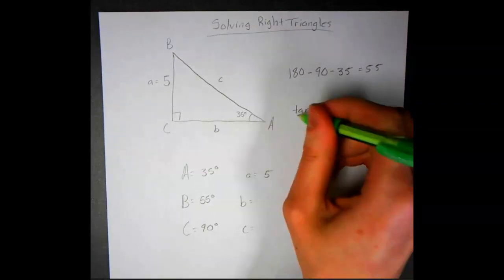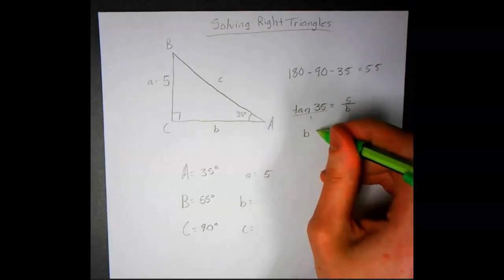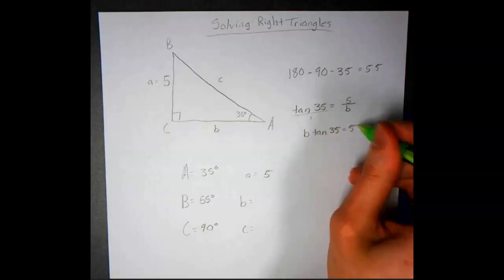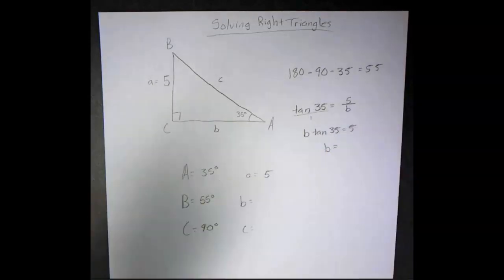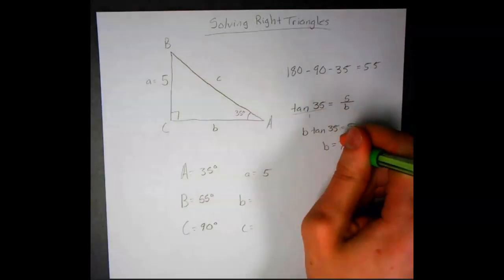We're going to cross-multiply. We'll have B times tan of 35 equals 5, and then we'll divide both sides by tan of 35. So B is going to equal about 7.1.